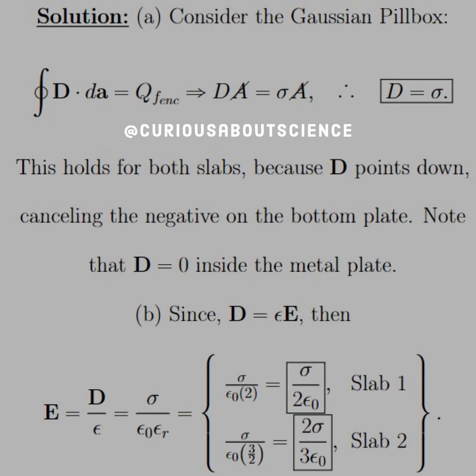All right, so since D equals sigma, we plugged it in, and then we'll also plug in the dielectric constant, which is different for slab 1 and slab 2. Note that slab 2 is 1.5, which is equal to 3 halves. Whenever you divide by a fraction, you multiply by the reciprocal, and that's how we get the answer shown there.